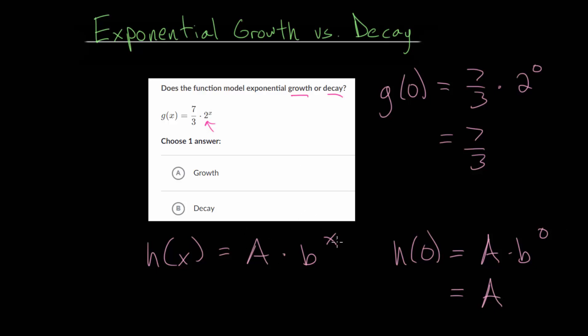So whatever number is multiplied by your exponential expression here, whatever it is, 2 to the x in this case, this number is essentially the starting value, when the x value, or a lot of times these model time, when that is equal to 0.